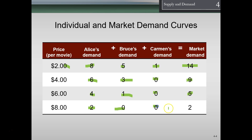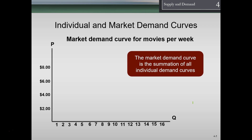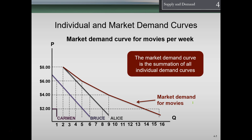At $8, Alice demands two, Bruce zero, Carmen zero — so the market total is two. If we graph each individual demand curve, we can see this pictorially. Carmen's curve is here, Bruce's here, and Alice's here, mapped out according to the table. The market demand curve is the summation of the individual demand curves — adding up the quantities at each price gives us the market demand curve.